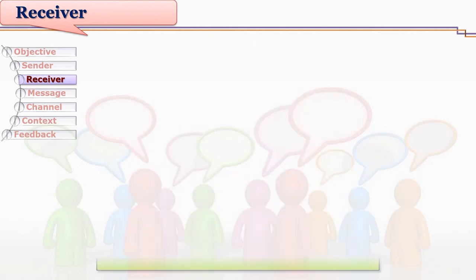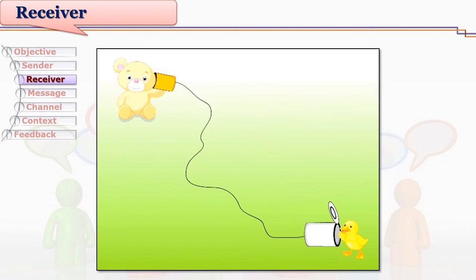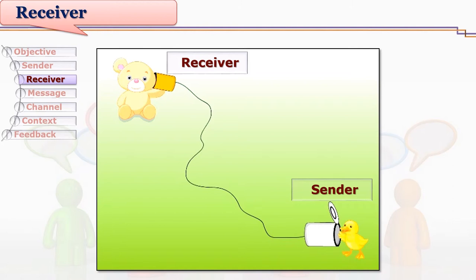Do you like this picture? Here, who is the receiver? Teddy is the receiver — the receiver is listening to the message. The receiver is the person who receives the message. It may be a person, an animal, a system, or a group of persons. Understanding the message is their responsibility.